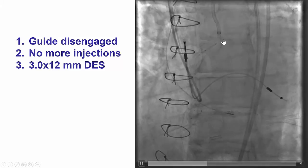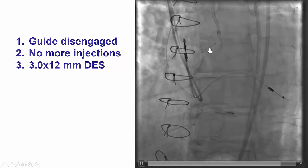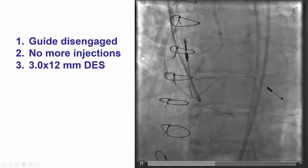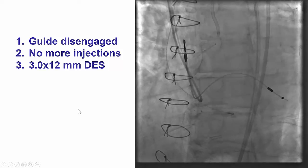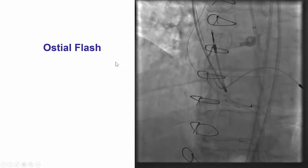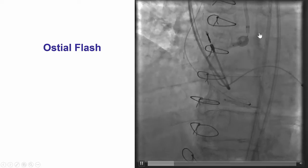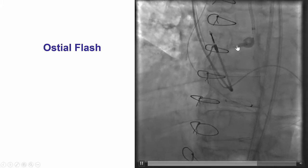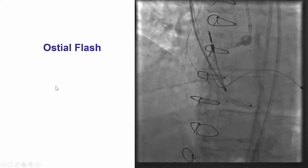Therefore, we disengaged the guide catheter. We did have an externalized guidewire, which made those manipulations fairly easy. We did not do any more injections, and then we deployed another stent at the ostium to make sure we sealed the perforation site.